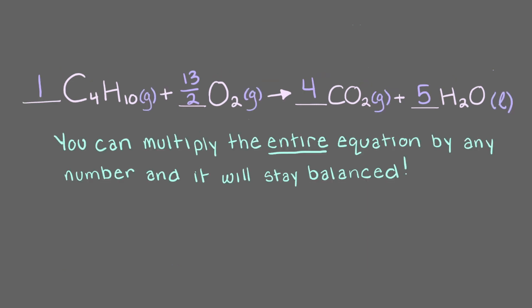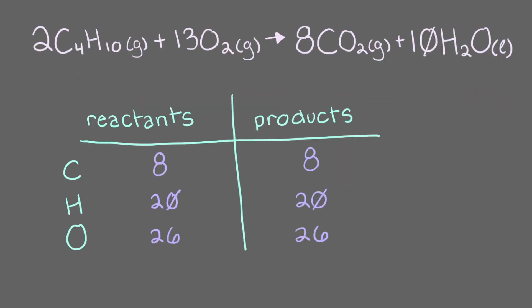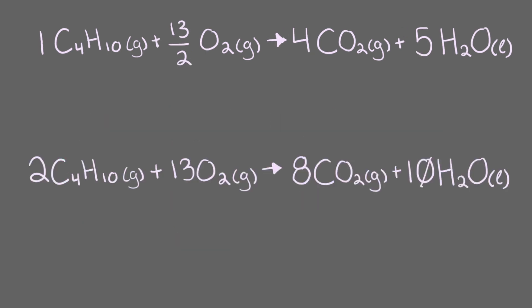One last thing, as long as the equation is balanced, you can multiply all of the coefficients by any number, and it will stay balanced. Can we also write this equation as 2C4H10 plus 13O2 yields 8CO2 plus 10H2O? Since this equation is still balanced, it can be written this way. Notice that in the first version we balanced, the ratio of butane to oxygen is 1 to 13 halves. In the second version, the ratio is 2 to 13. These two ratios are the same. That's why fractions are okay to use. All we care about are the ratios.